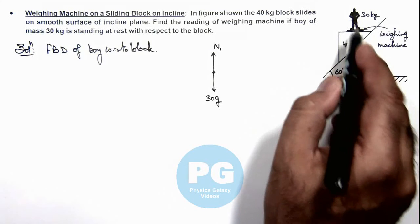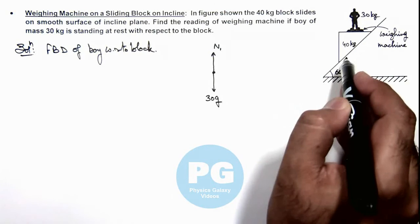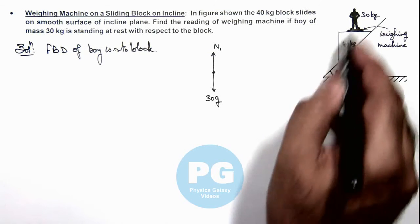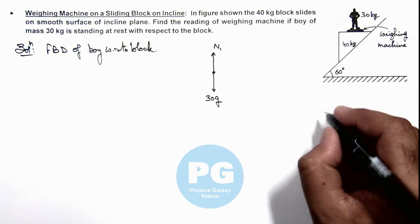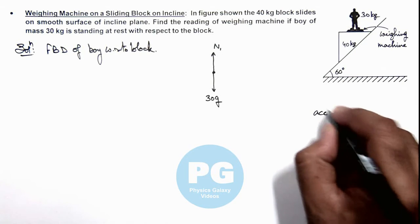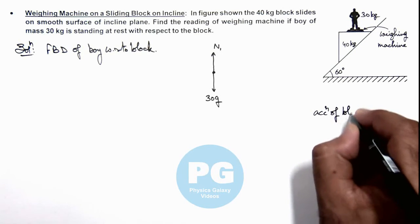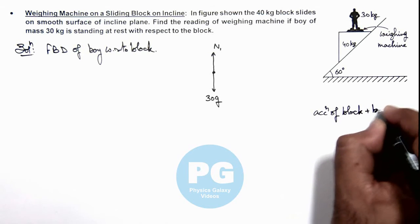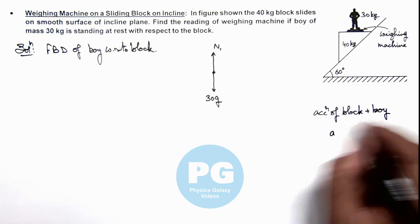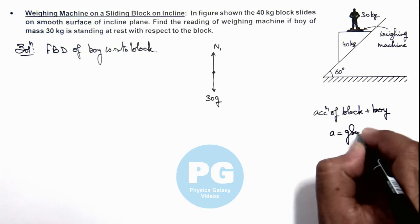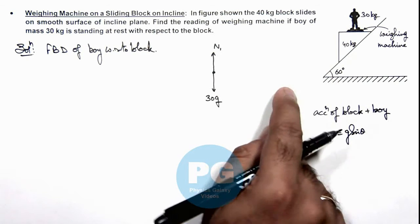And here, as the boy is at rest on the block and the ground is smooth, we can directly state that the whole setup is sliding down. And we can write the acceleration of block plus boy here will be down the incline and this will be g sin θ, as only due to mg sin θ it is sliding.